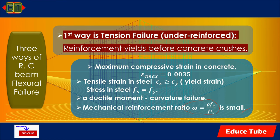For tension failure, the maximum compressive strain in concrete is 0.0035, the tensile strain in steel εs is greater than or equal to the yield strain εy, and the stress in steel fs equals fy.